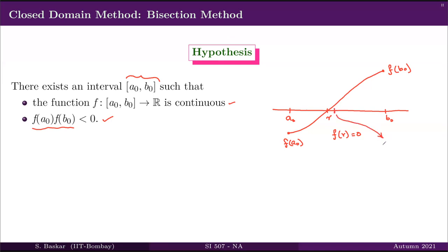The idea is to first bisect the interval a₀ to b₀ and take the midpoint. The midpoint is given by (a₀ + b₀)/2. Let us call this x₁. We then find f(x₁) and check if f(a₀)·f(x₁) < 0, meaning the sign change is happening between a₀ and x₁. Therefore, we can apply the intermediate value theorem to see that there is a root lying between a₀ and x₁, so we discard the second part.